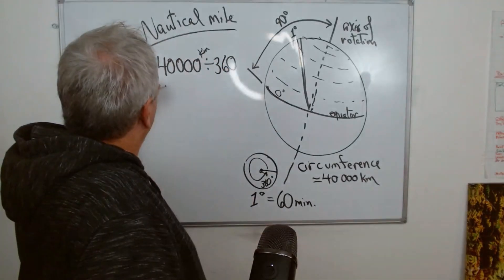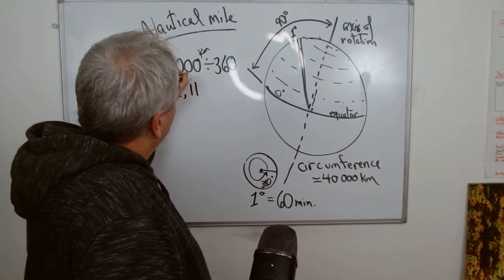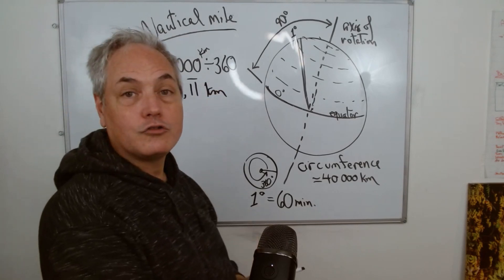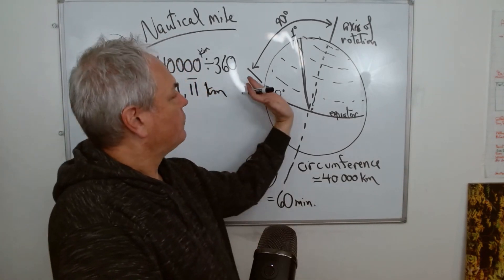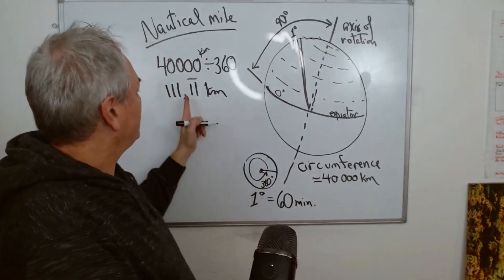We end up with 111 kilometers. So we have about 111 kilometers per degree when we go from the equator all the way to the top. On top of that, we know that in each degree there's 60 minutes.